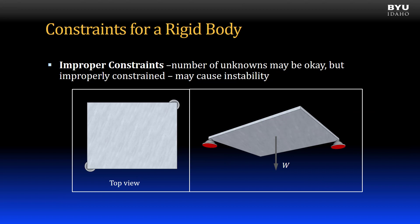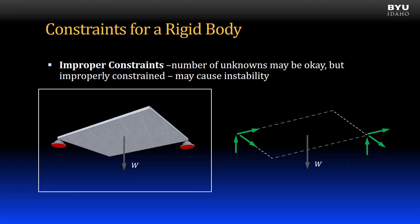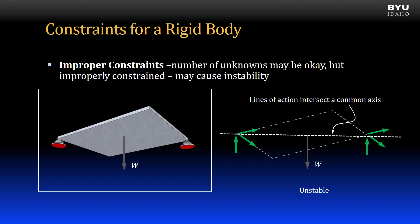In this second example, a plate subjected to its own self-weight is supported by two ball and socket joints. A free body diagram shows that there are six reactive forces acting on the plate, suggesting that it is statically determinate. However, if a single additional force were applied towards the free corners of the plate, it would cause rotation and become unstable. A rule is that if the lines of action of all the reactive forces intersect a common axis, then the body is improperly constrained.